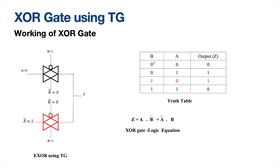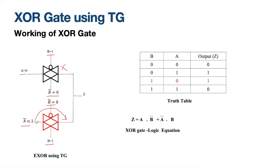Third combination: A equals 0 and B equals 1. A_bar is automatically 1. B equals 1, so B_bar equals 0. TG1 has PMOS fed with 1 and NMOS with 0 — so TG1 is switched off. For TG2, B_bar equals 0 goes to PMOS and 1 goes to NMOS — so TG2 is switched on. The input to TG2 is A_bar which equals 1, so it will be transferred to output. Z equals 1 — correct.